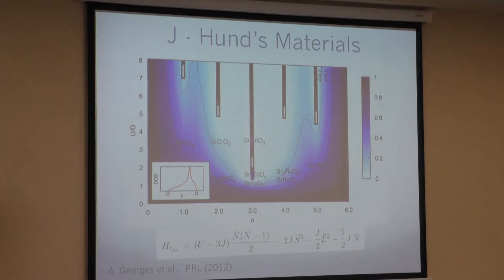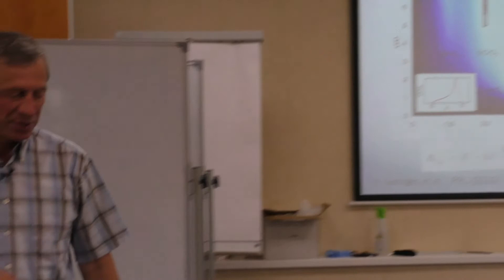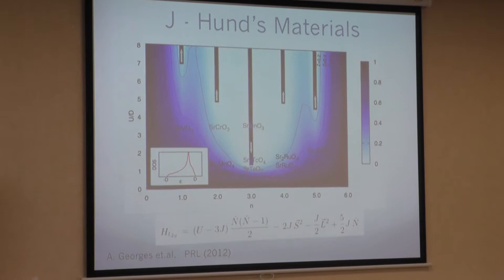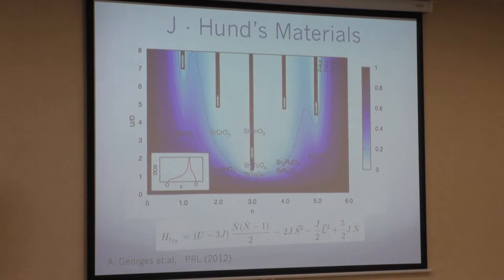Another important property in real materials is not only Hubbard U but also Hund's J. You probably remember from quantum mechanics Hund's exchange effects in the D-shell. Starting from the last five years or so, there has been great attention to so-called Hund's materials, especially related to new superconductors — the pnictide superconductors. Pnictides are based on iron, and iron has a large Hund's exchange. There is not much Mott physics there, but a lot of Hund's physics.